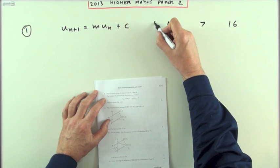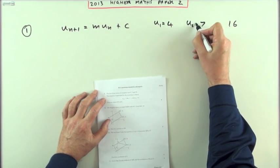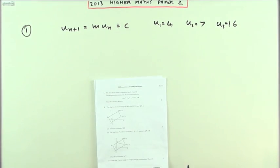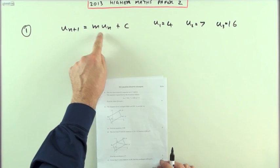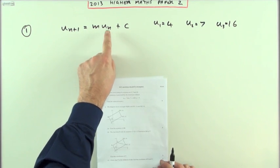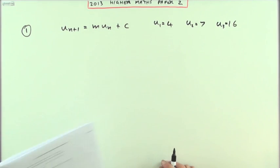So u1 is 4, u2 is 7, and u3 is 16. I'm just going to feed them into the appropriate places, because un is the term before un+1.